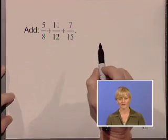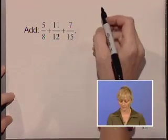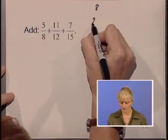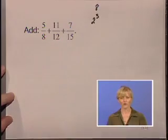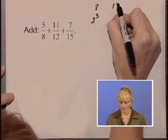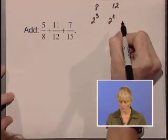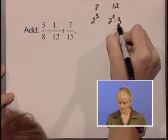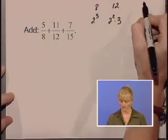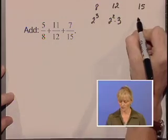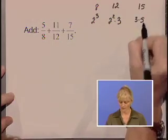We do that by prime factoring each denominator separately. The 8 can be prime factored into 2 cubed, 12 can be prime factored into 2 squared times 3, and 15 can be prime factored into 3 times 5.